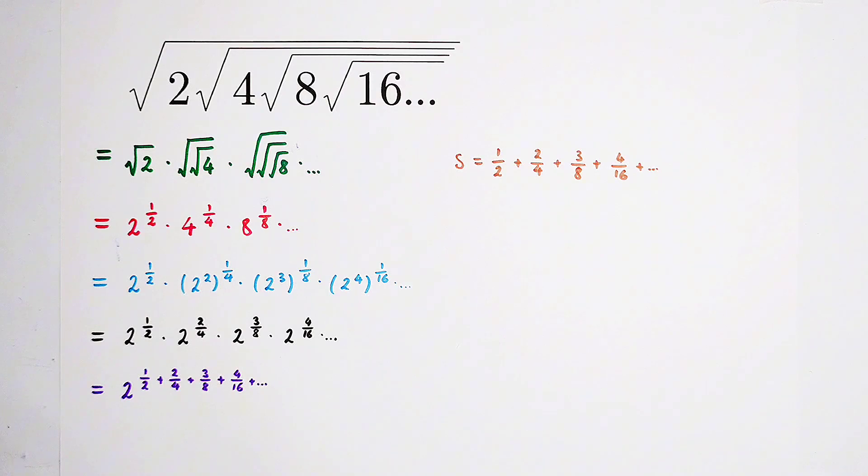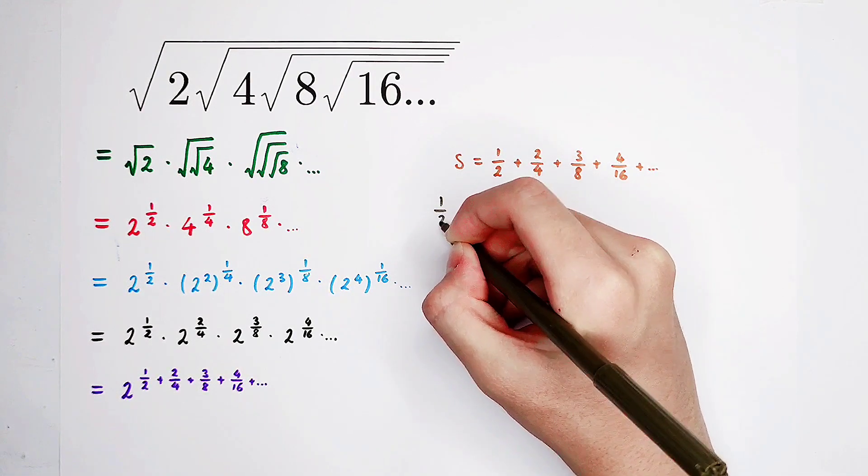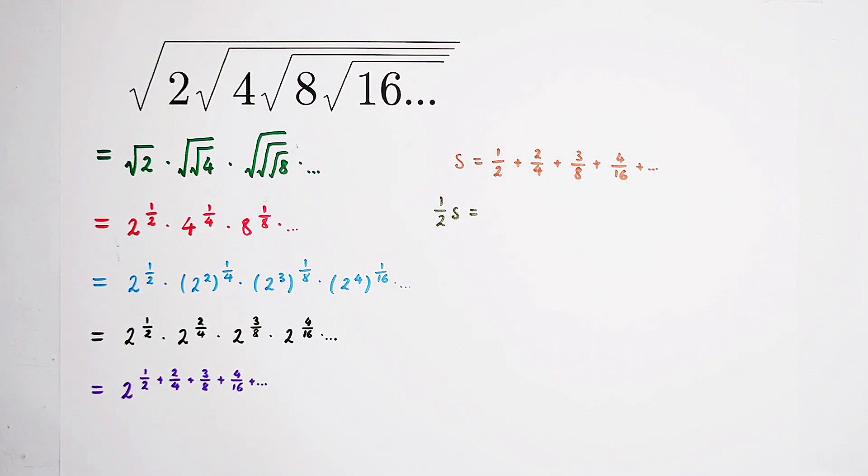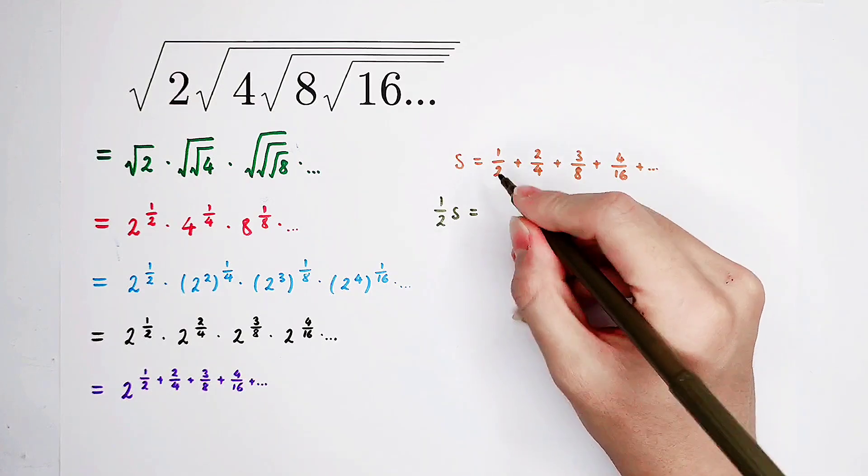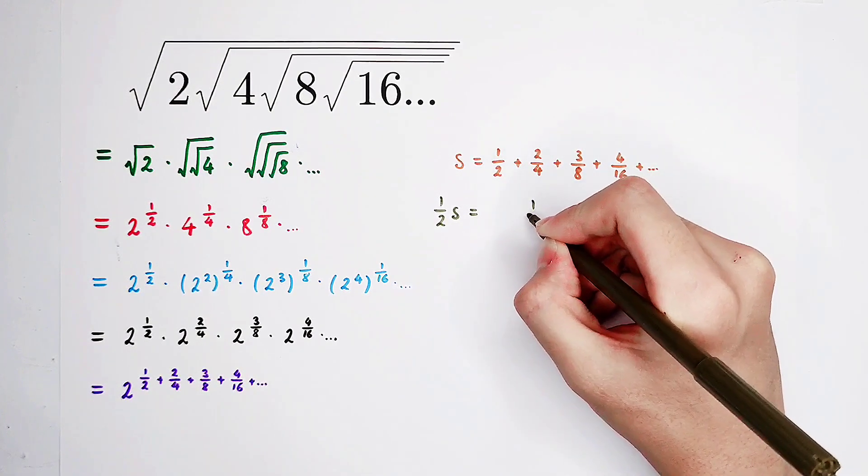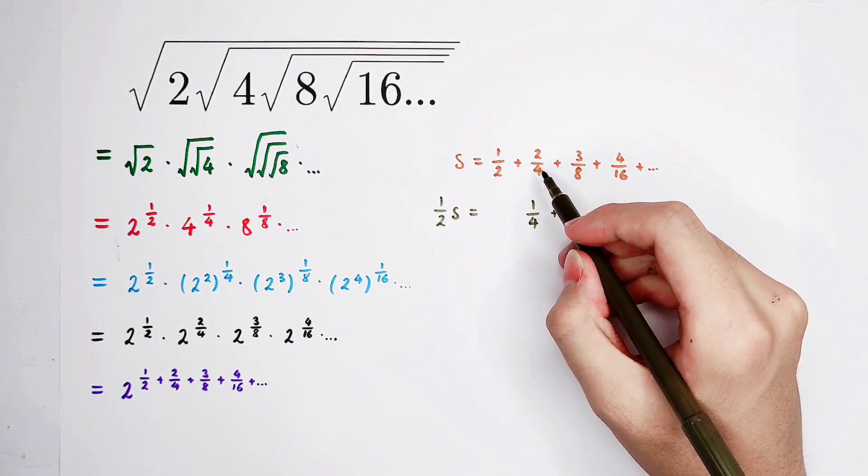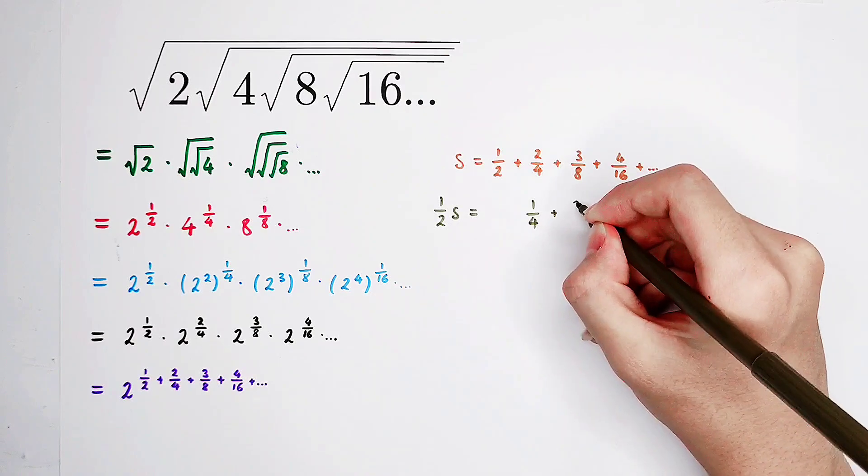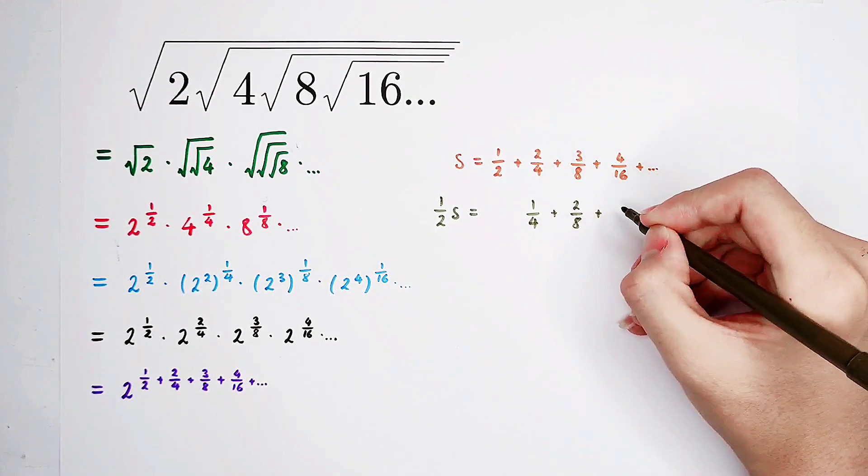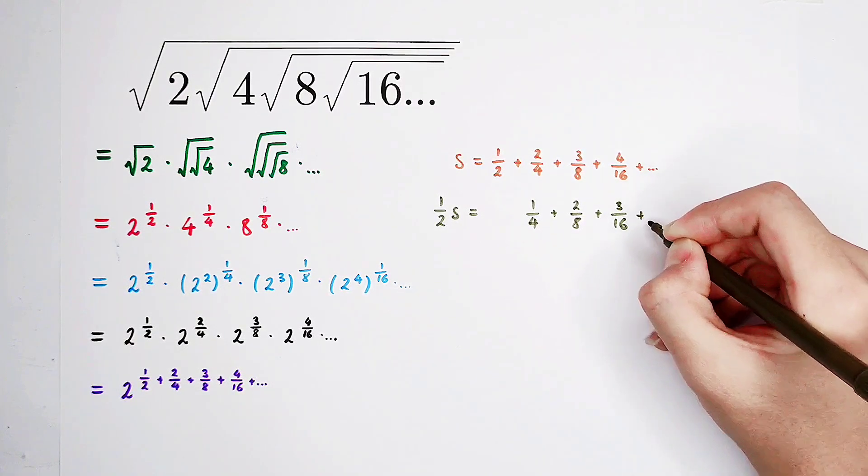Magic! I like to multiply both sides by 1 over 2. So the left hand side is 1 over 2 s, and the right hand side is 1 over 2 times 1 over 2. 2 over 2 is 1 over 4. 2 over 4 times 1 over 2 is 2 over 8. And here, it's going to be 3 over 16, and so on.